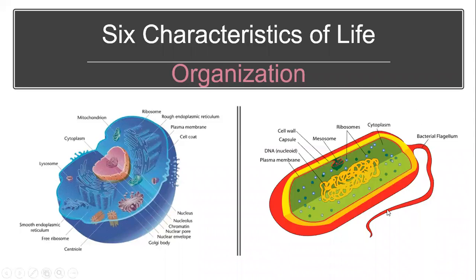On the right-hand side of the screen, much simpler, shown in red and yellow here, is a bacterial cell. These are microscopic. You cannot see these without a microscope. And even though they're very simple inside, you'll notice there's no nucleus or mitochondria or lysosomes, they are still organized and they still are considered to be alive.